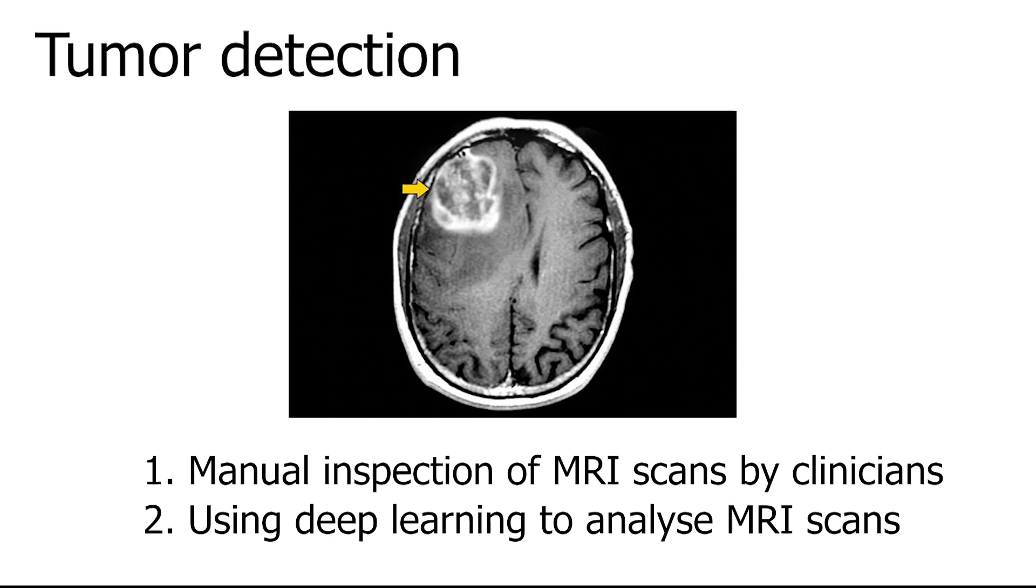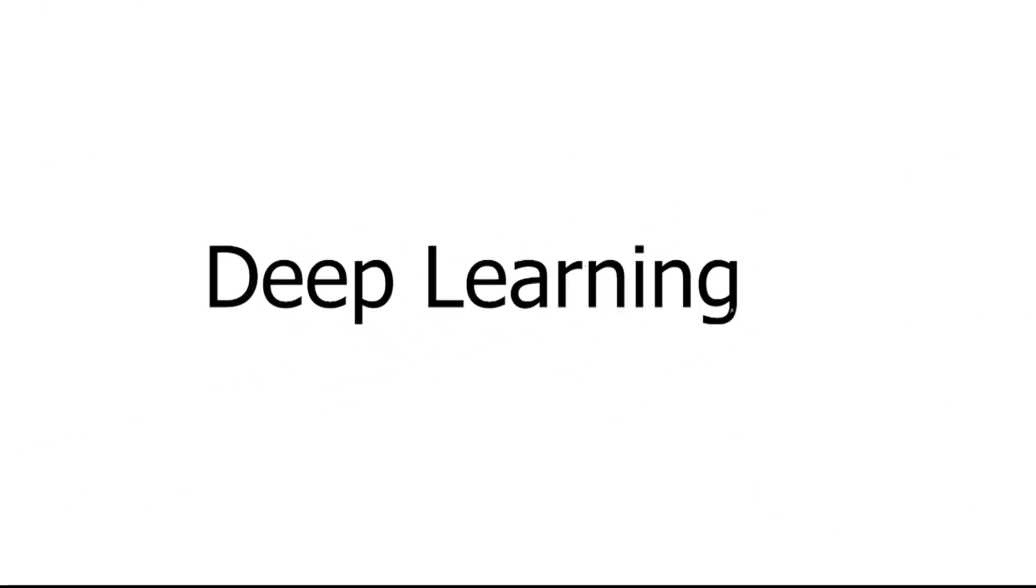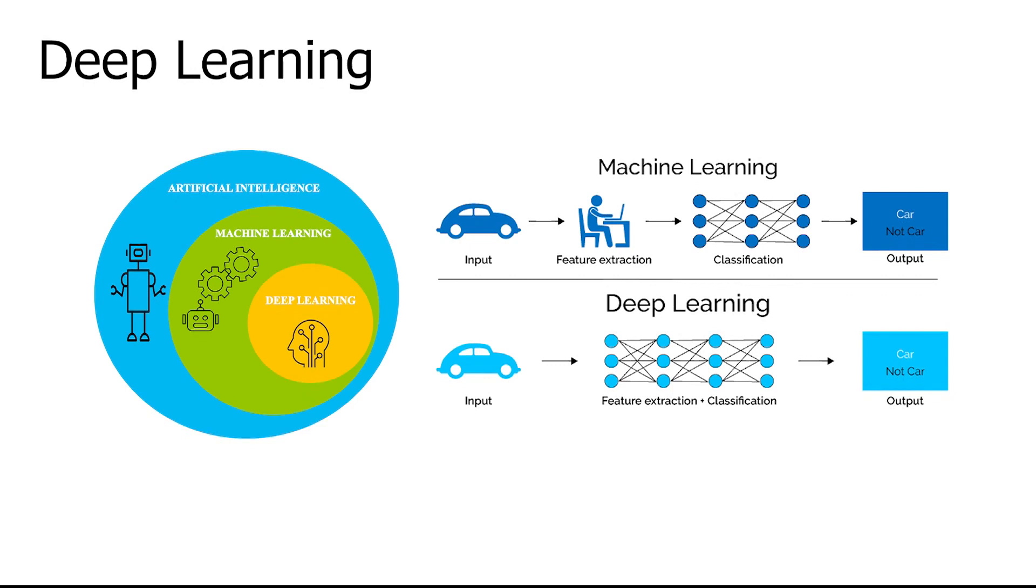What is deep learning? Deep learning can be explained as an application of machine learning that uses complex algorithms and deep neural networks to train a model. In deep learning, compared to machine learning, feature extraction and classification are both done by the neural network itself.